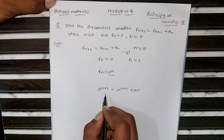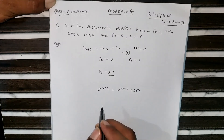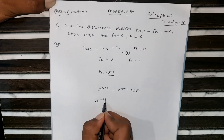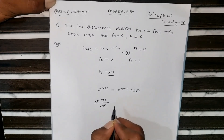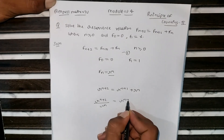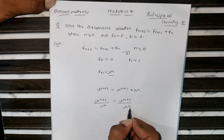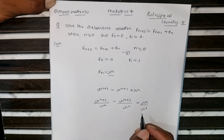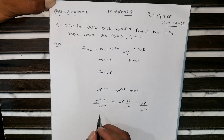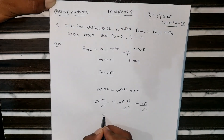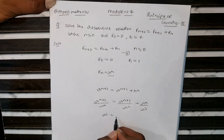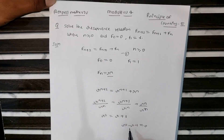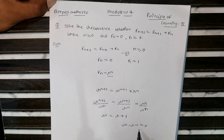Dividing the whole equation by r^n to solve it more easily: r^(n+2) / r^n = r^(n+1) / r^n + r^n / r^n. When you solve it, it becomes r² = r + 1. Rearranging, the equation becomes r² - r - 1 = 0.